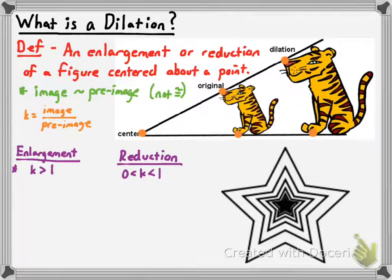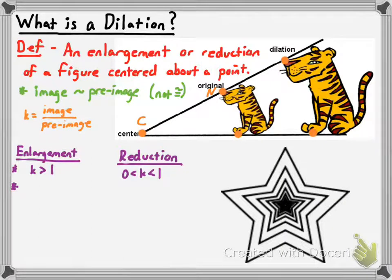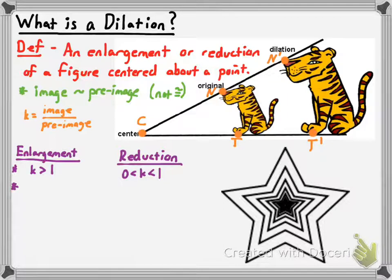Another fact about an enlargement is that the image is always further from the center of the dilation than the pre-image is. Let's say the center is point C, the original tiger's nose is point N, the original tiger's toe is point T, so the image of the nose is N' and the image of the toe is T'. The distance from center C to each of these image points is greater than the distance from C to the original pre-image points — so CT' is greater than CT.